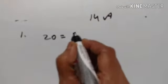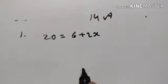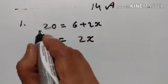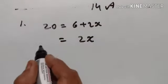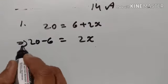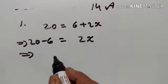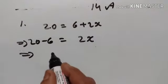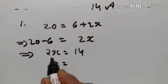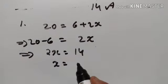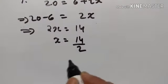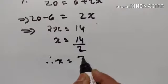20 is equal to 6 plus 2x. 2x: 6 is transposed to the other side, it becomes minus 6. 20 minus 6 is equal to 14, so 2x is equal to 14. x: 2 is transposed to the other side, it becomes divided by 2. 14 divided by 2. Therefore, x is equal to 7.